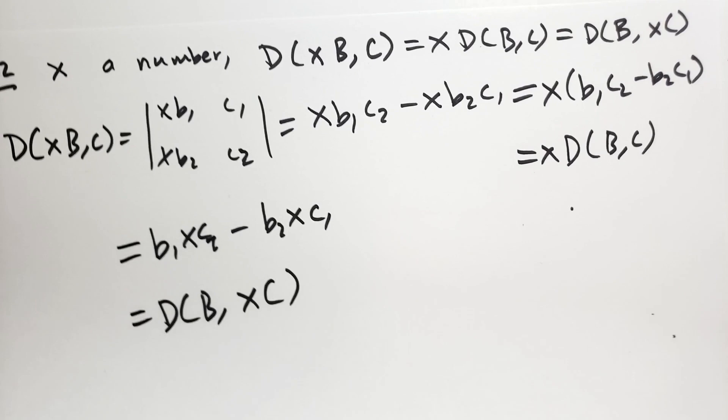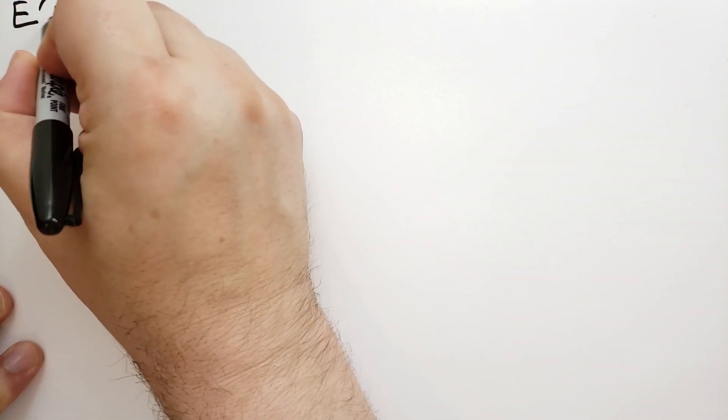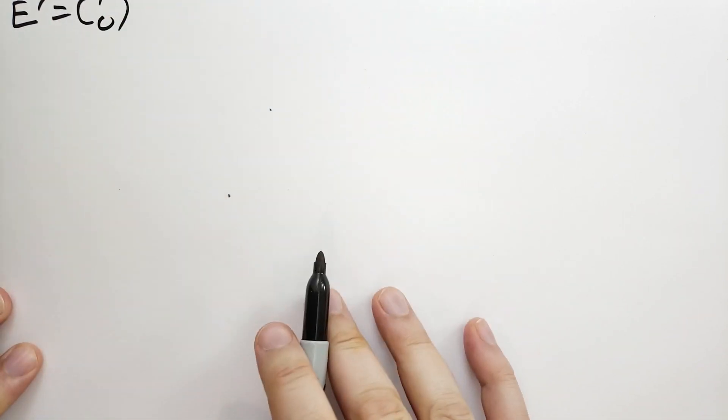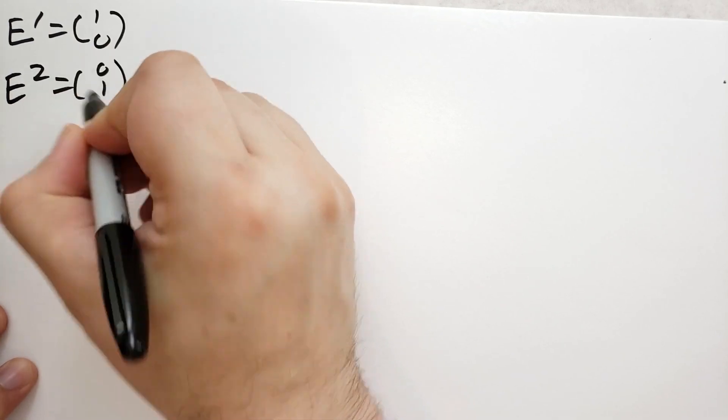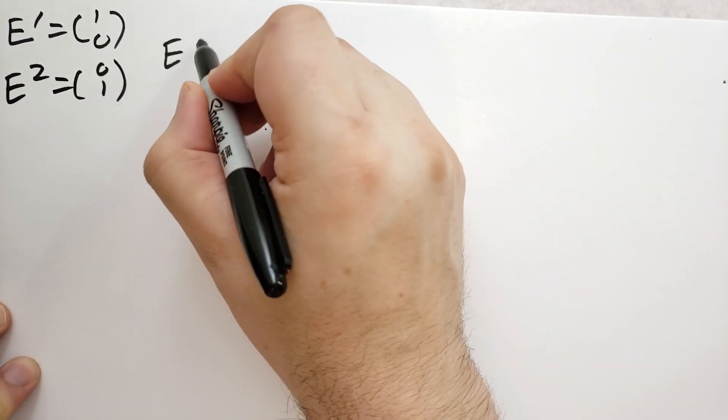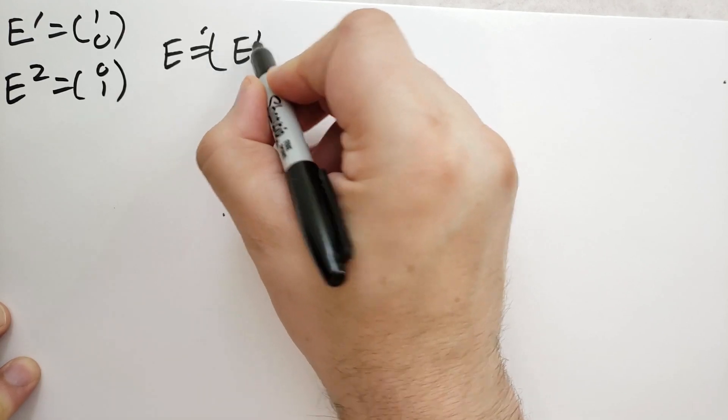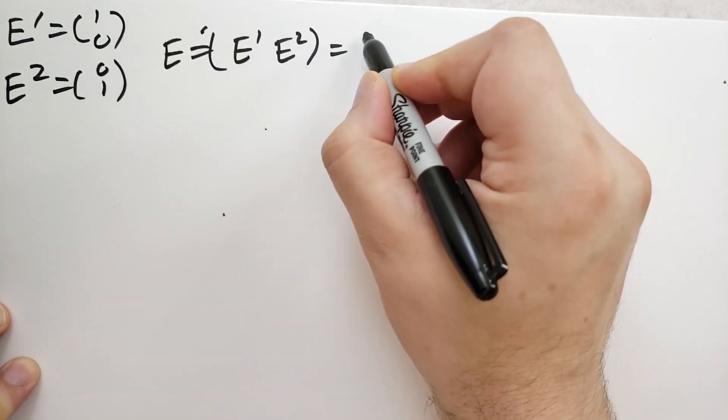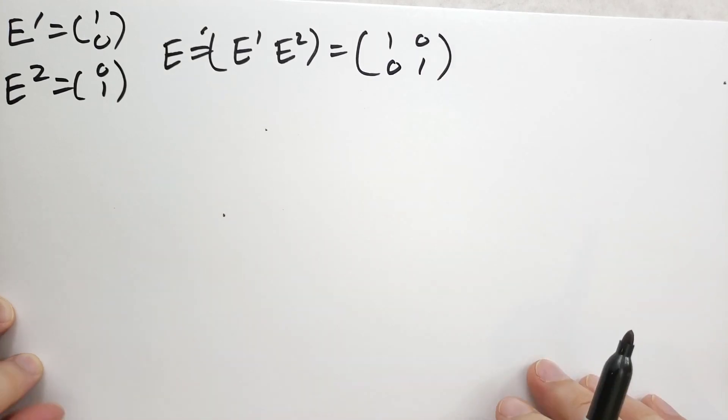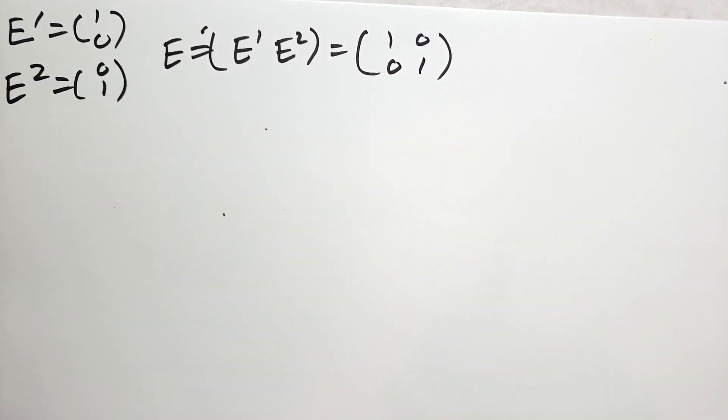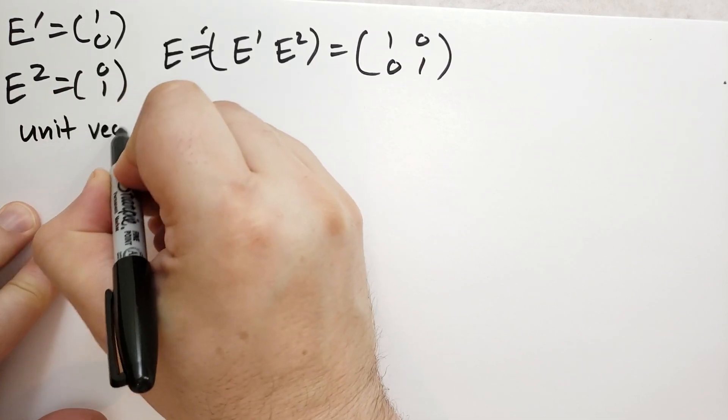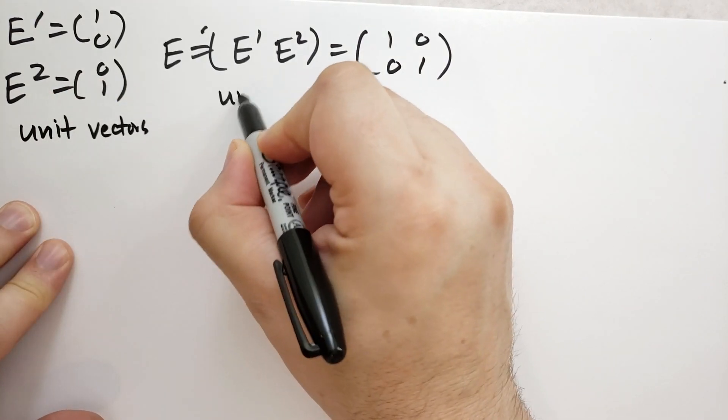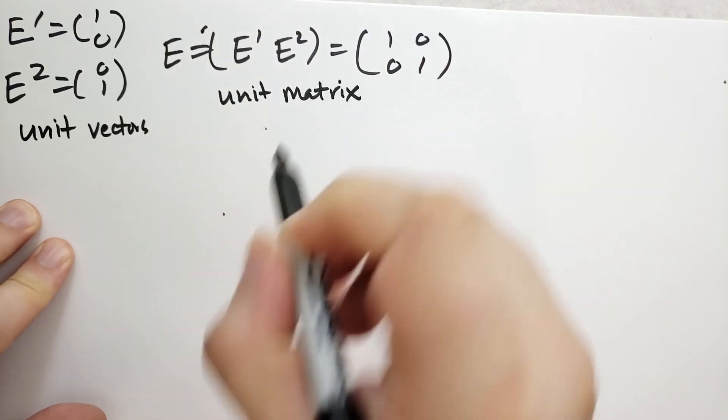At this point, we're going to talk about unit vectors. So we define E1 to be 1, 0, and we define E2 to be 0, 1. And we can define the E matrix to be equal to E1, E2, or just this matrix here. So it just has 1s on the diagonal. That's the E matrix, the unit matrix. So these are unit vectors, and this is the unit matrix.